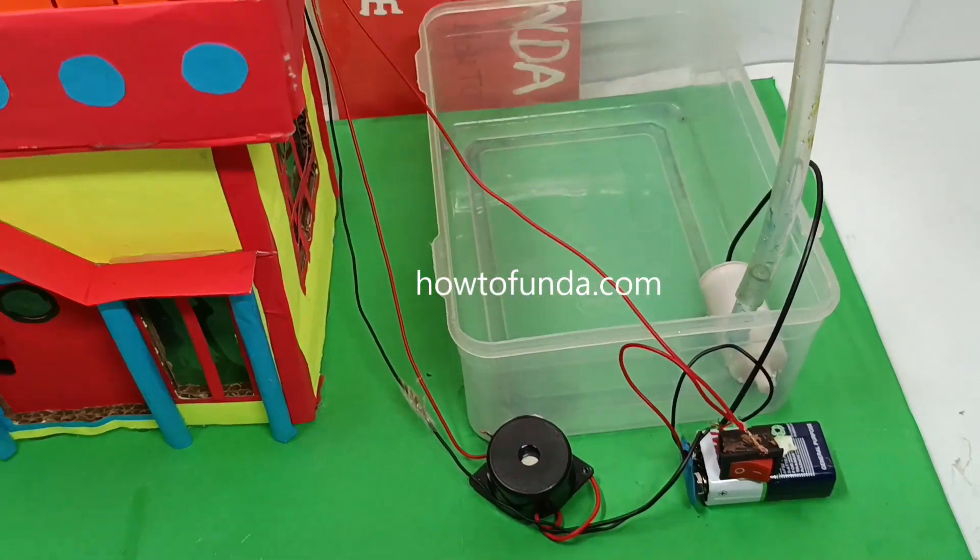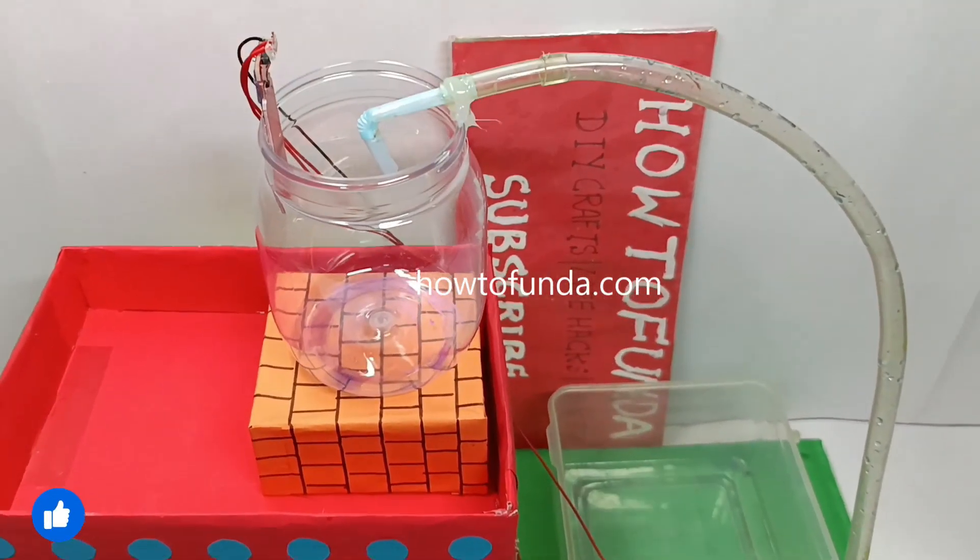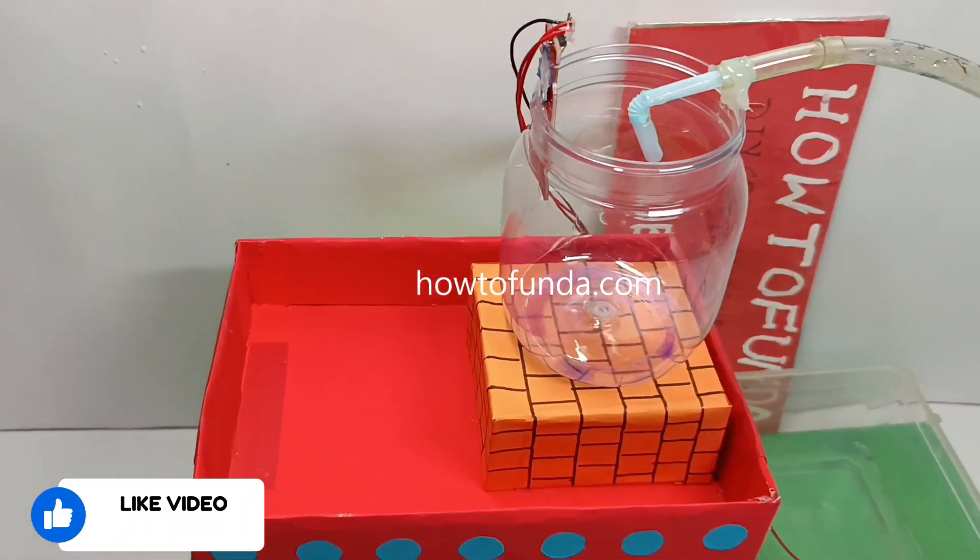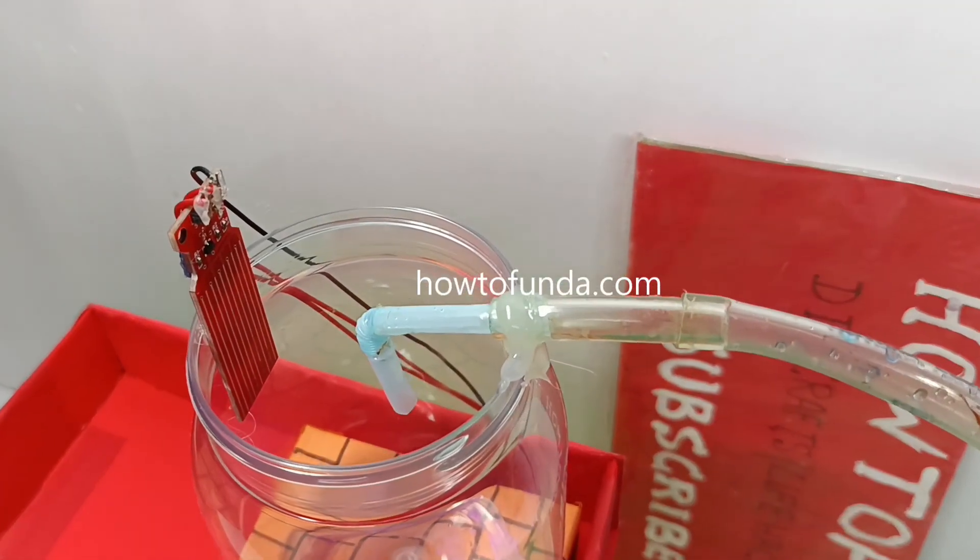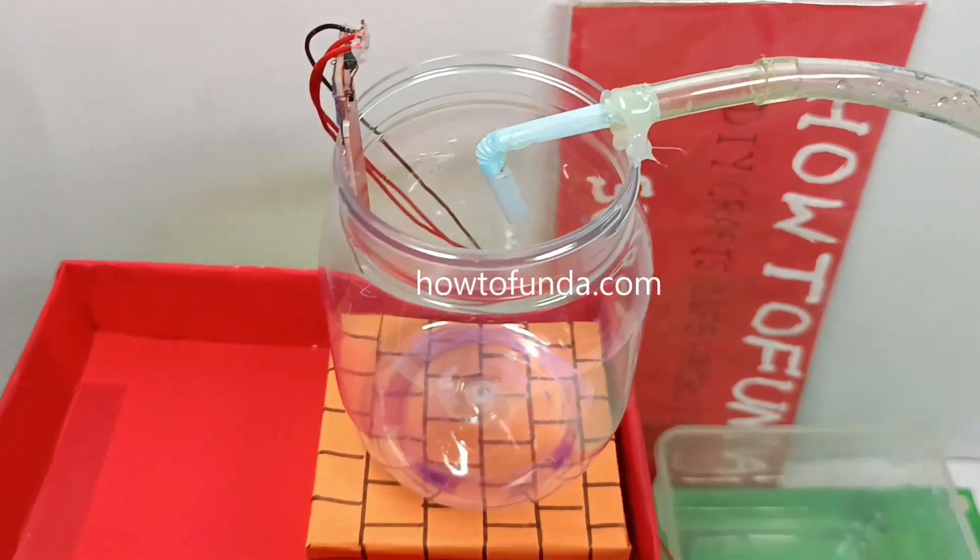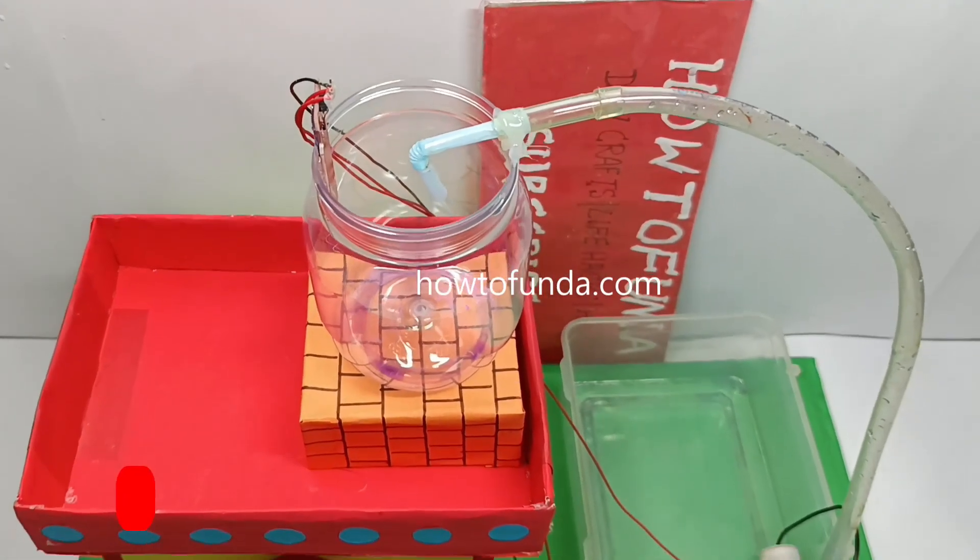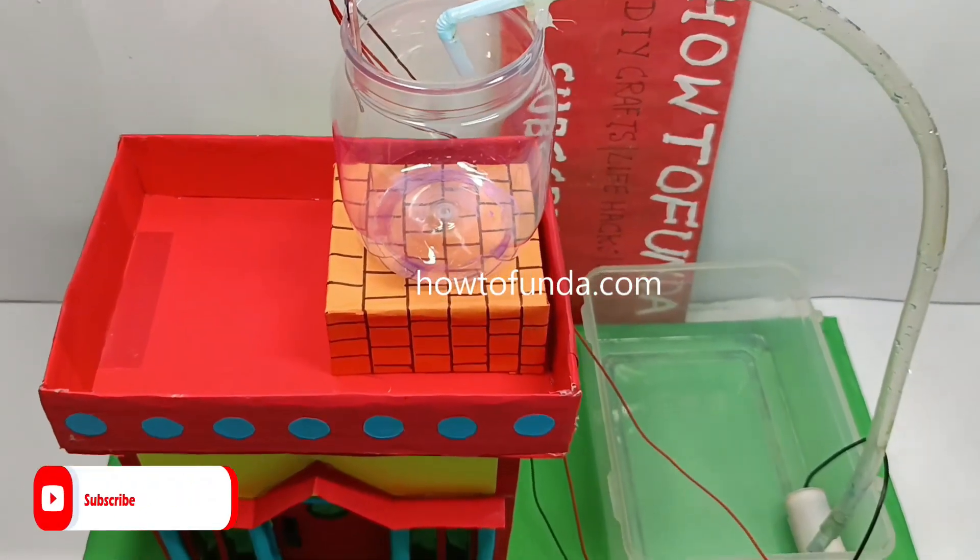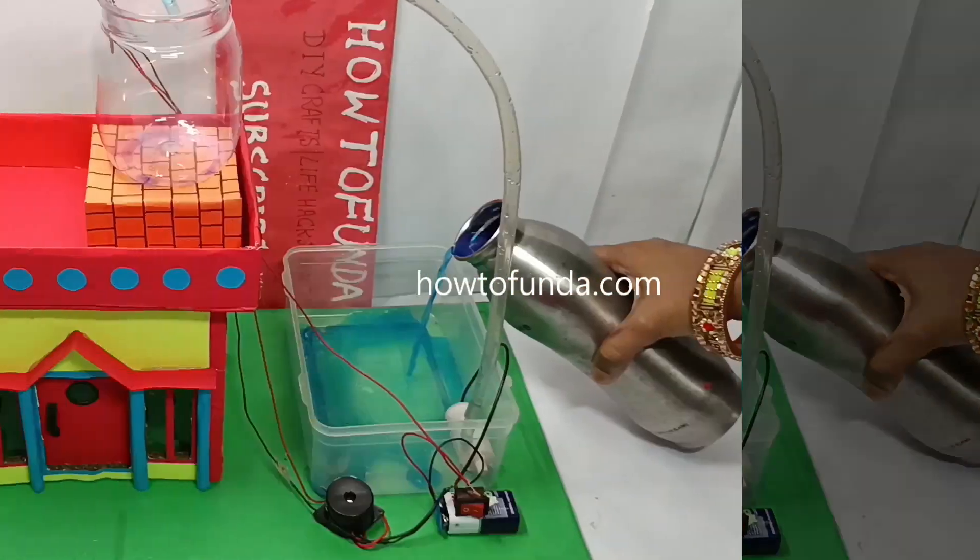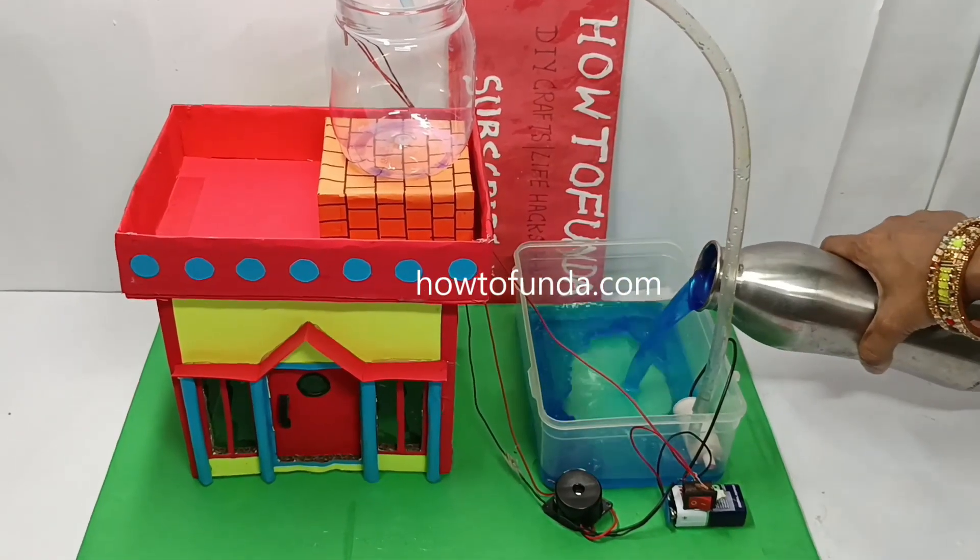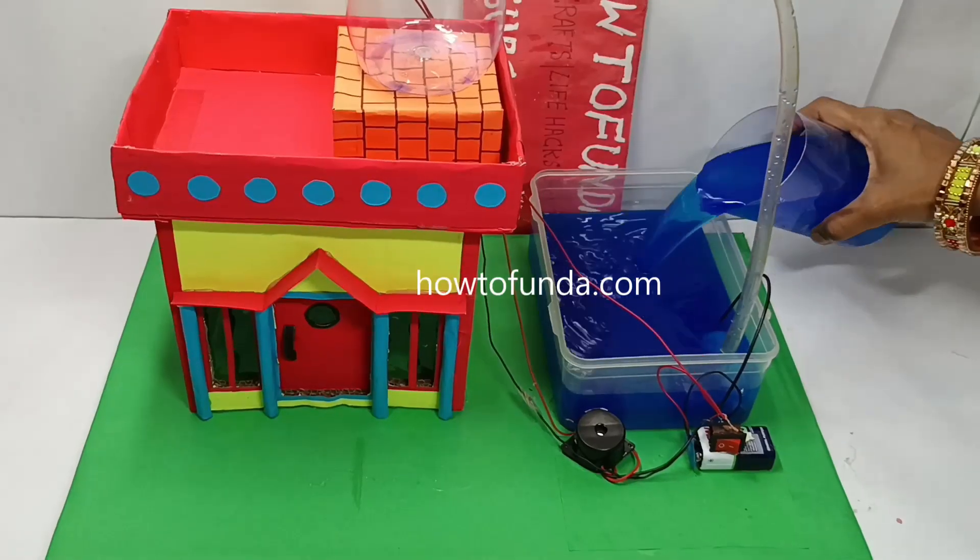Hello friends, welcome back. In this video I will be explaining the working model, which is a water tank overflow alarm. This is a very simple project that will help us avoid water wastage by alerting you when your tank is full and about to overflow. That is the main objective - here we are going to save water. That is the main motto of this working model.